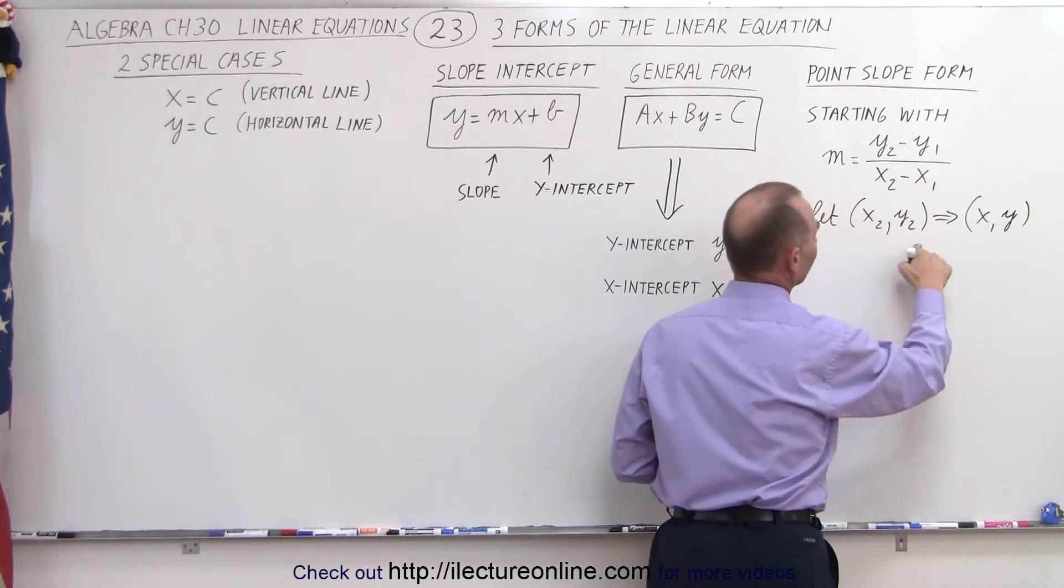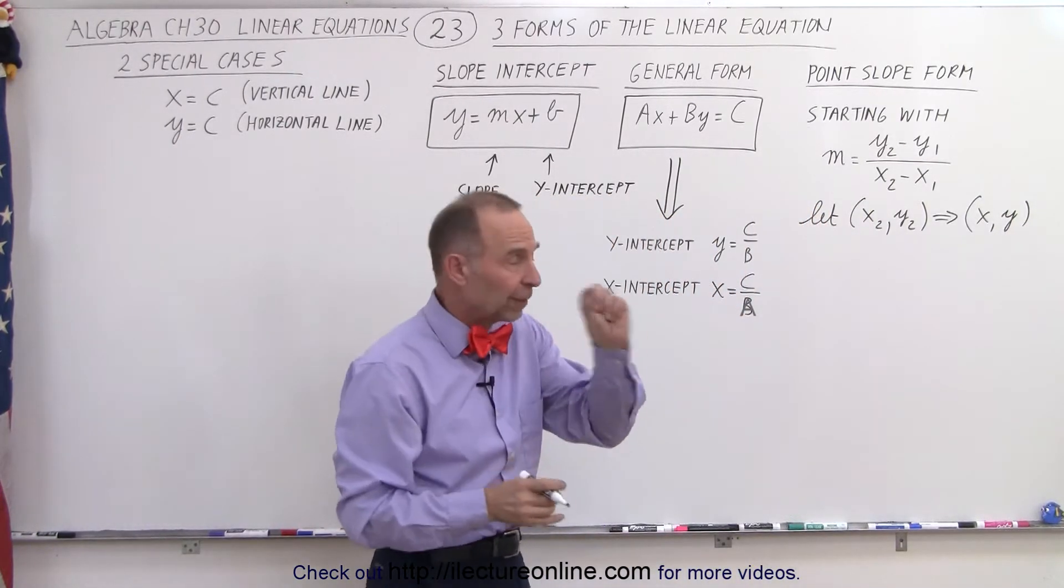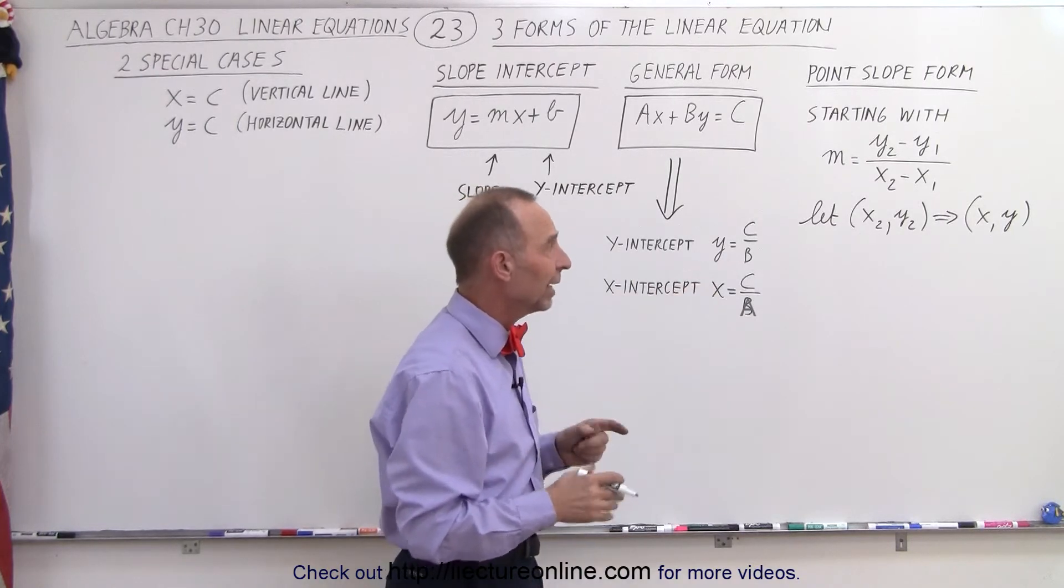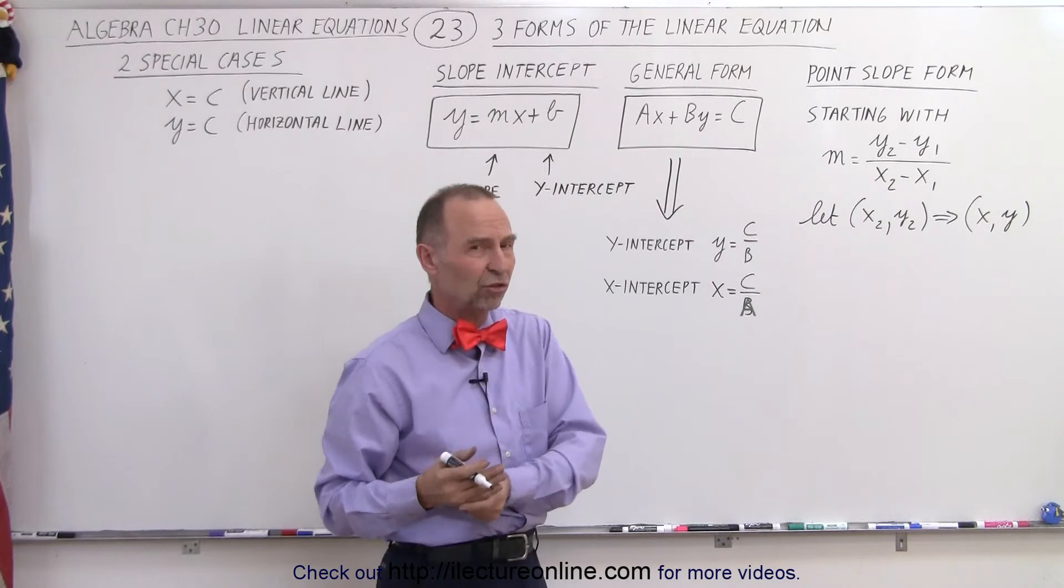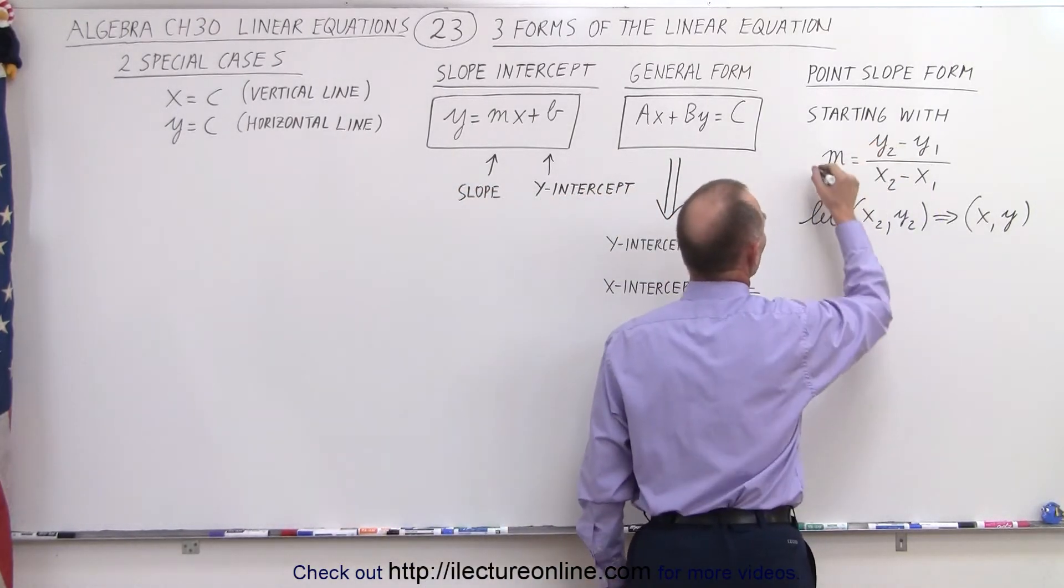So notice when it's written like this, we have very specific values for x and y, a particular point on the plane, or in this case on the line. But if we want to make that a general point, we just simply call it x and y, and we plug that back into the equation right here.